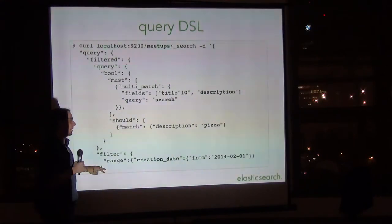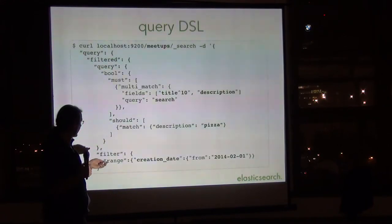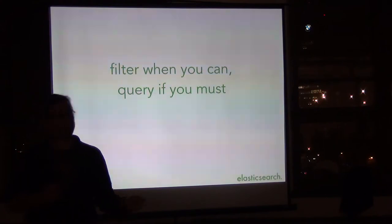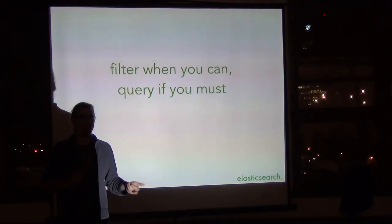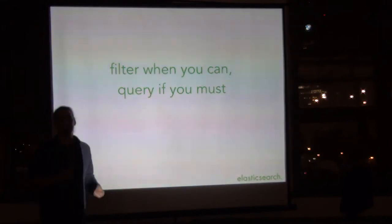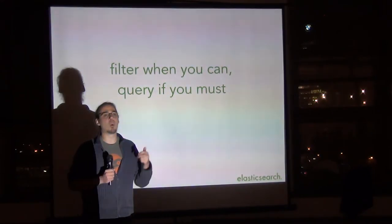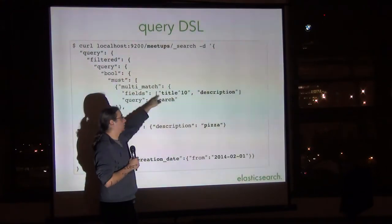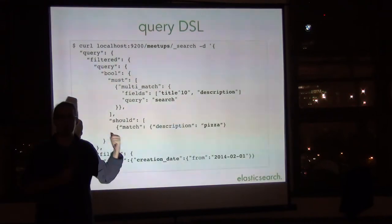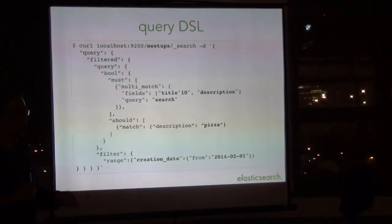That's the query part. The filter part — here we just have a simple range filter. It's important to know the difference between filter and query. The rule of thumb is: always filter when you can, and only query when you must. Filters are much faster, they're cacheable and will be cached very aggressively, which will increase your performance. The difference is that filters are boolean — either a document matches or it doesn't. Whereas a query not only tells you that a document matches, but how well it matches. The pizza part is in the query and not in the filter because the query is the part that determines the score — the quality of the match.